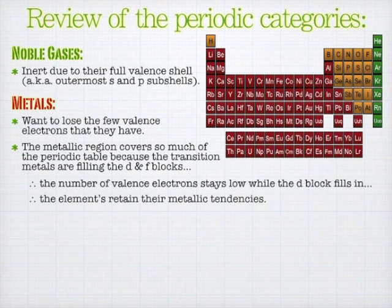And so that's why if you were to pull a random element based on atomic number out of a hat, they'd probably end up being metals. Because again, you're putting electrons in the S, and then you're dumping them into the D's and F's until they come back out.